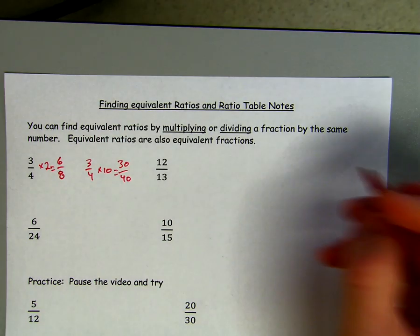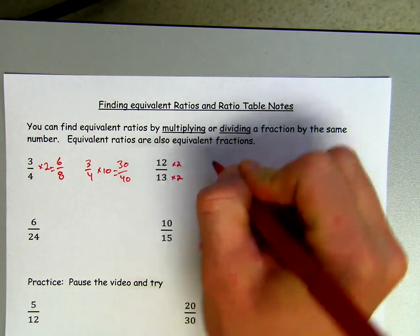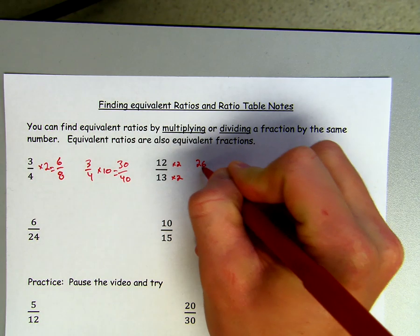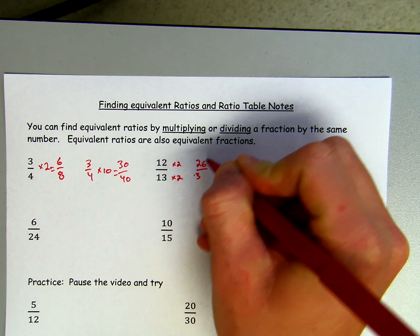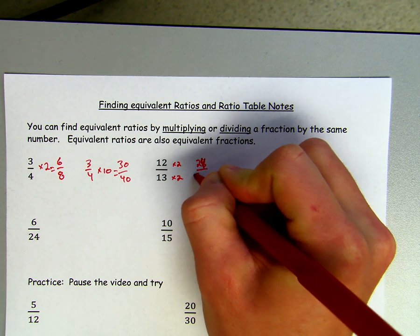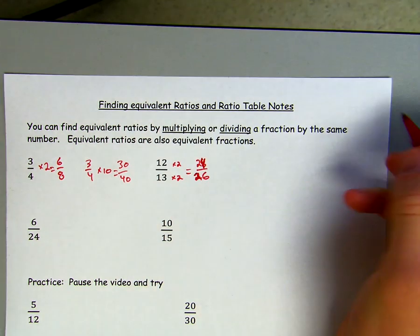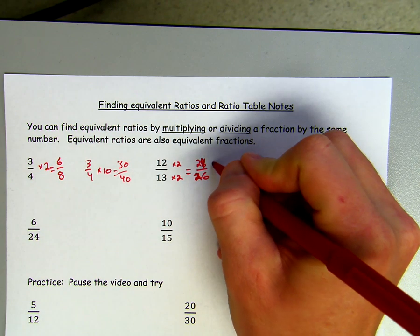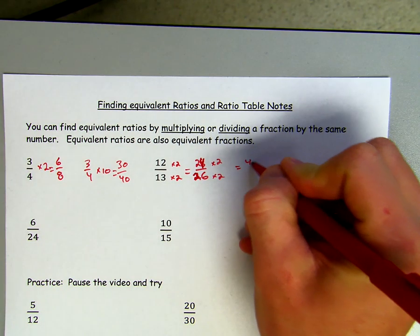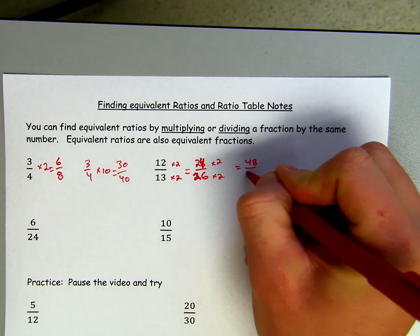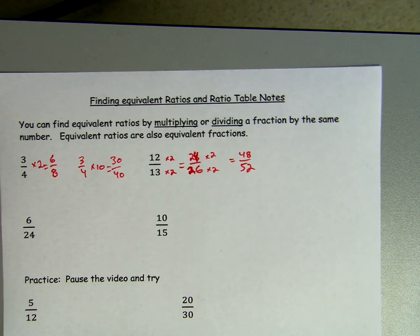Same thing for 12/13. You can multiply the top and the bottom by 2 — 24/26 would be an example. You can even multiply the top and the bottom again by 2 and you get 48/52. So again, they're just equivalent fractions.